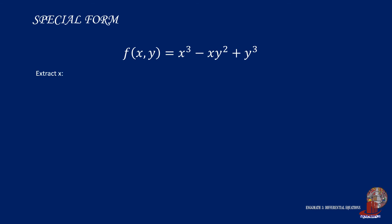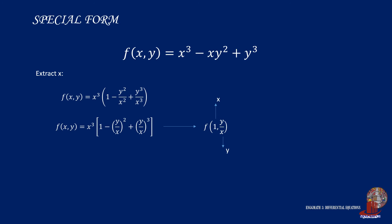Extracting x³ from x³ - xy² + y³ gives x³ · (1 - y²/x² + y³/x³). Simplifying y²/x² as (y/x)² and y³/x³ as (y/x)³, we can interpret this as x³ · f(1, y/x). Checking each term: x³ gives 1³ = 1, xy² gives 1 · (y/x)², and y³ gives (y/x)³.